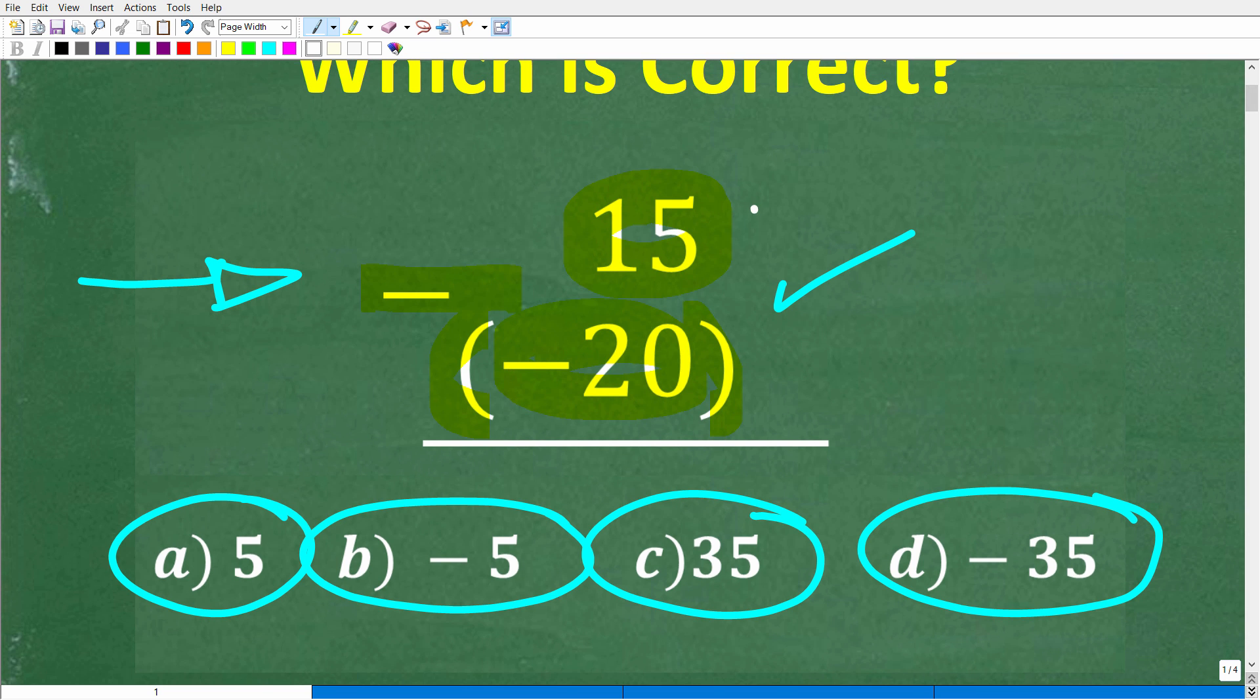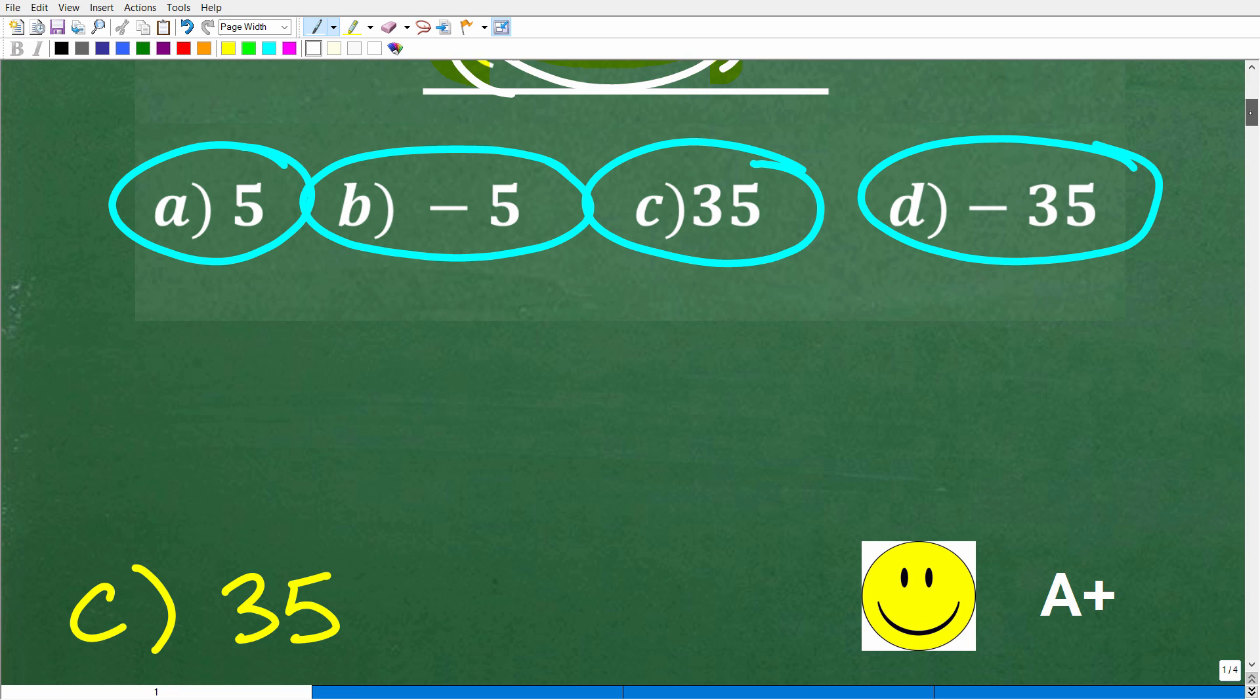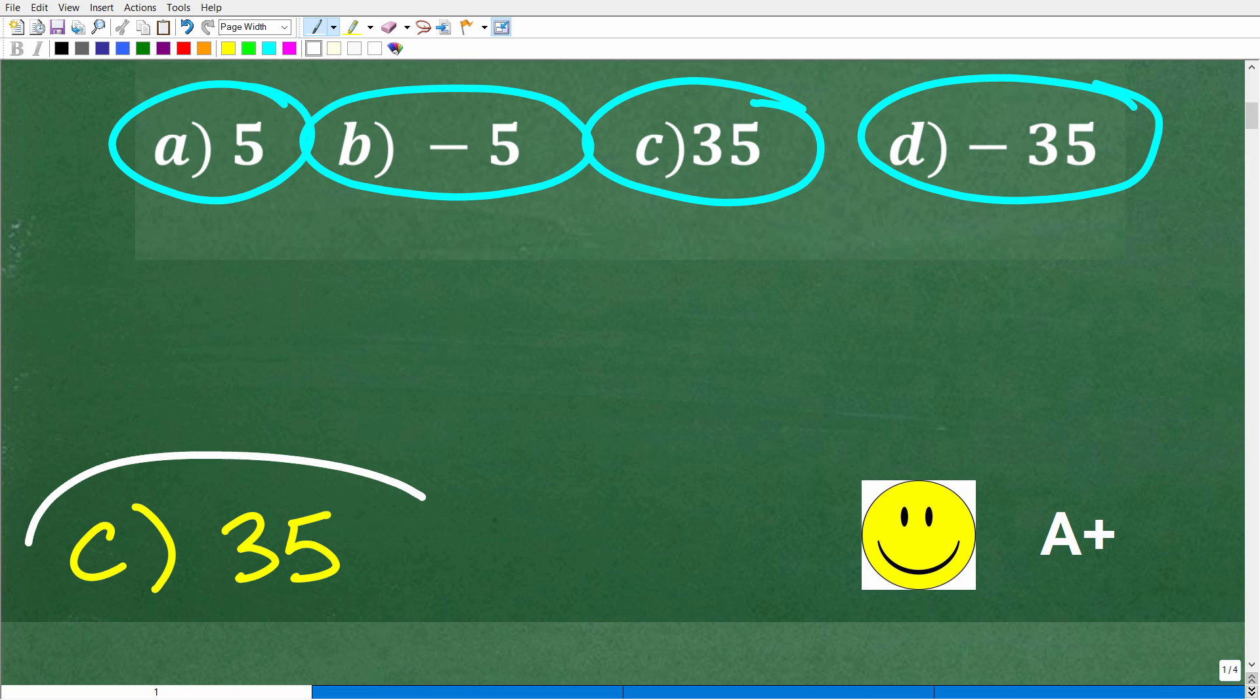So once again, pretty simple problem here. We have 15 minus a negative 20 in parentheses. Let's go ahead and take a look at the correct answer. The correct answer here is C, 35.